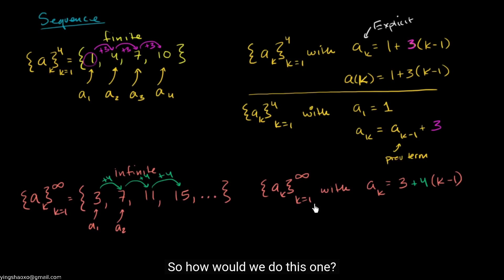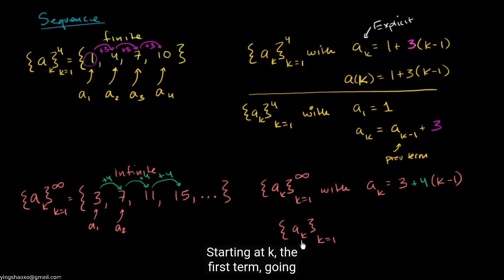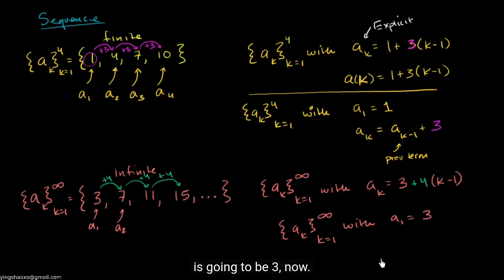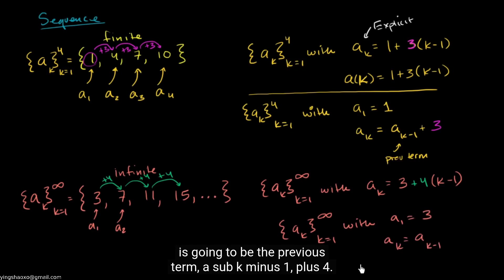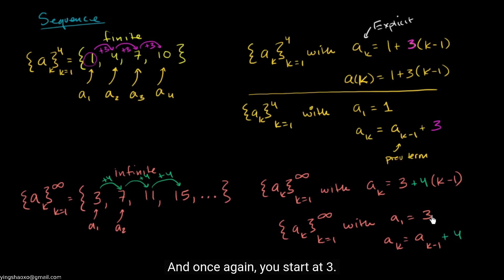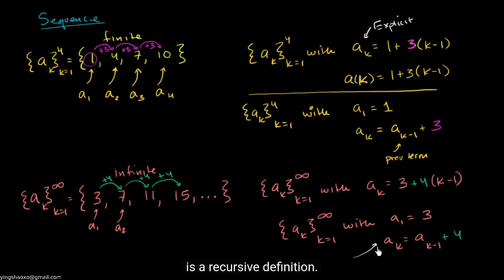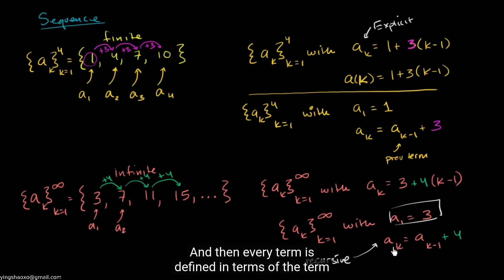For the infinite sequence, we could write a sub k starting at k equals 1 going to infinity, with a sub 1 equal to 3, and a sub k equal to a sub (k−1) plus 4. You start at 3, and if you want the second term, it's the first term plus 4 — that's 7 — and you keep adding 4. This right over here is a recursive definition. We start with a base case, and every term is defined in terms of the term before it.